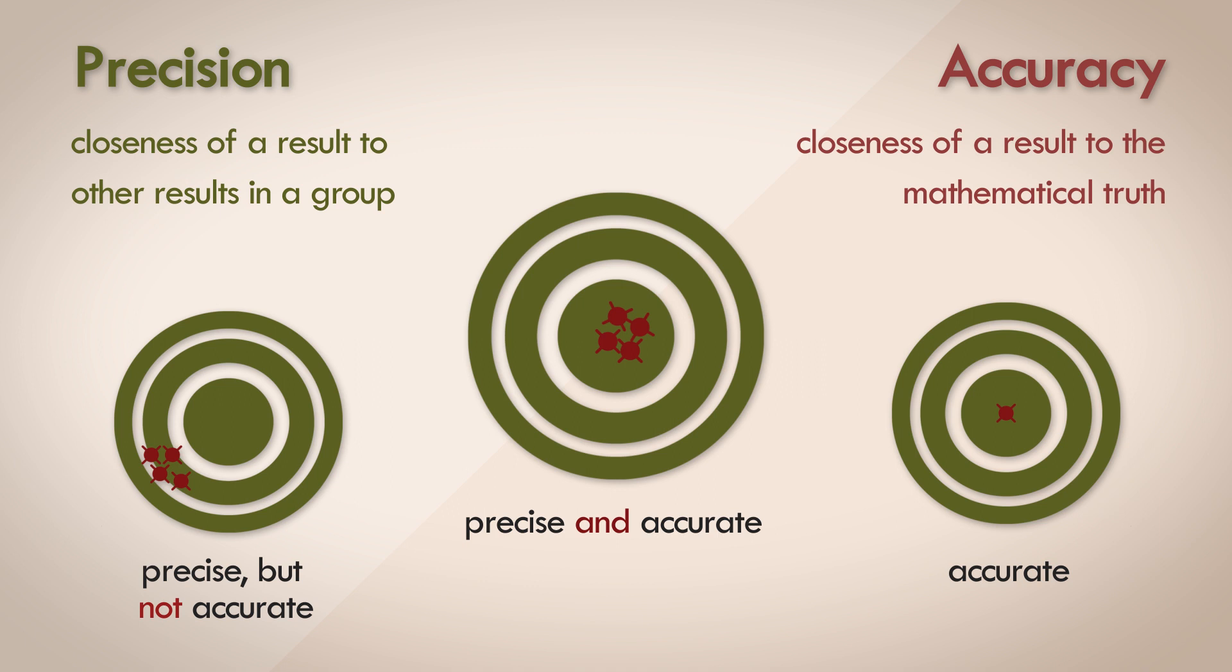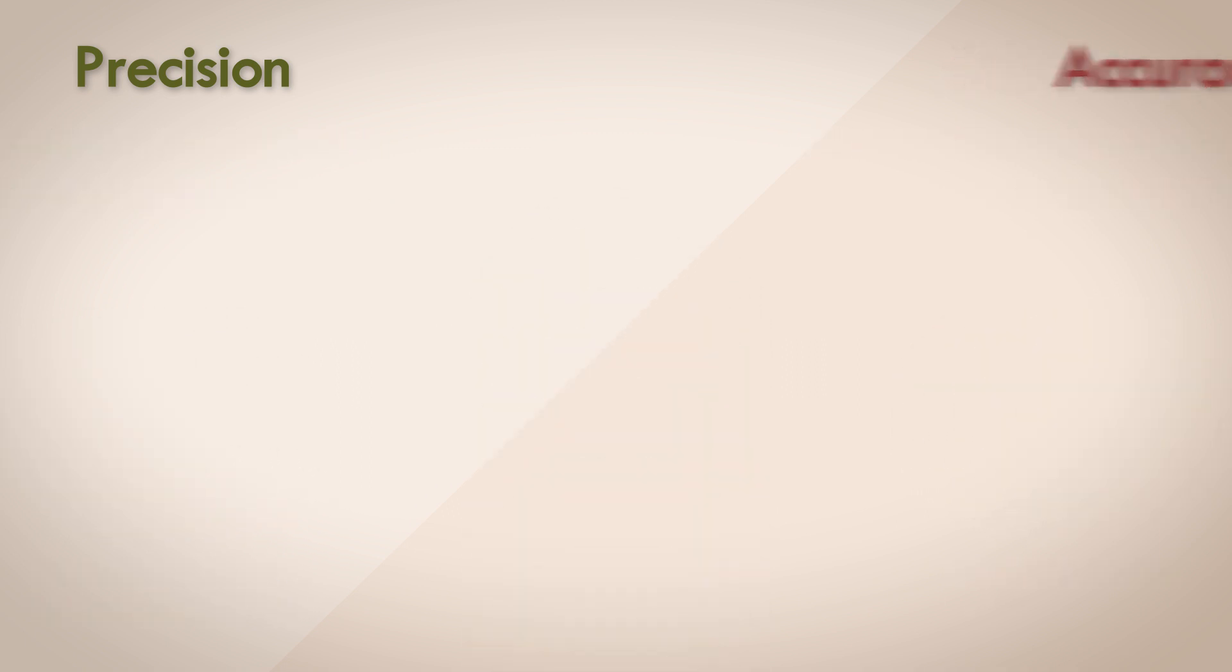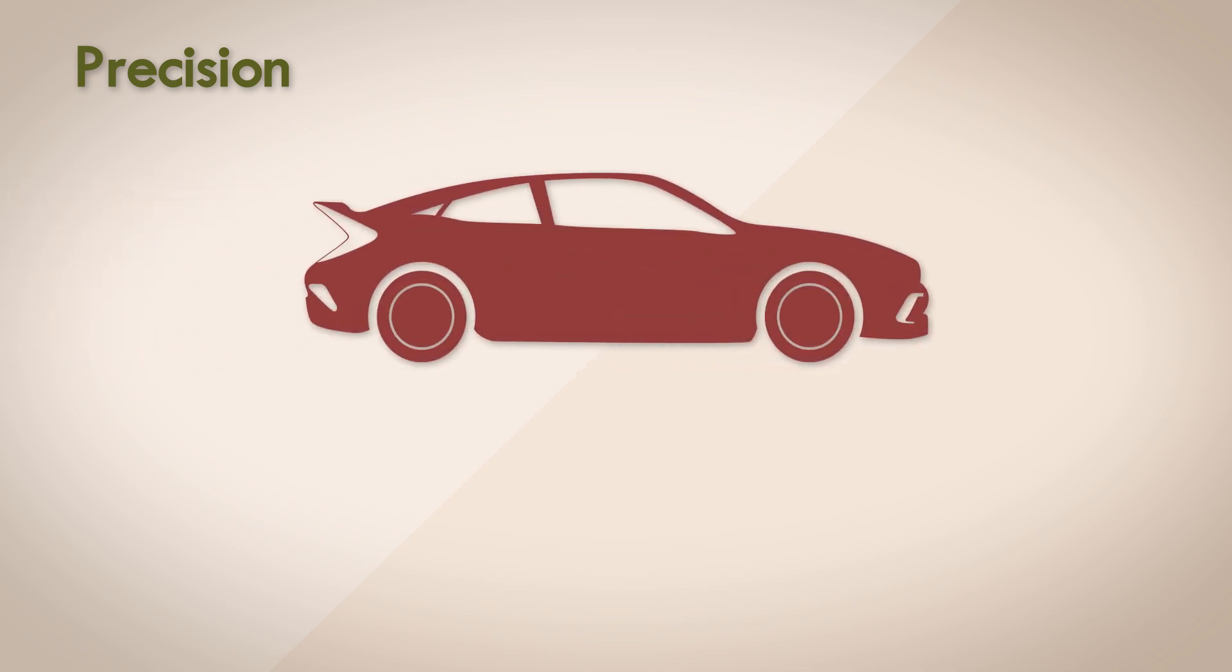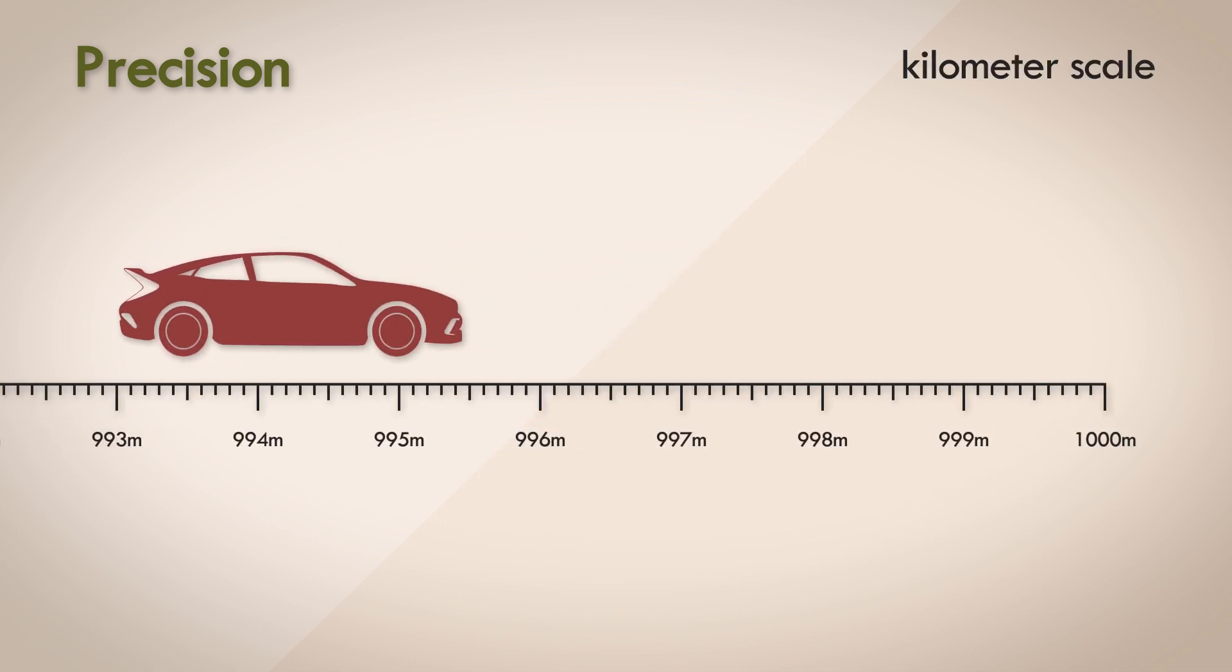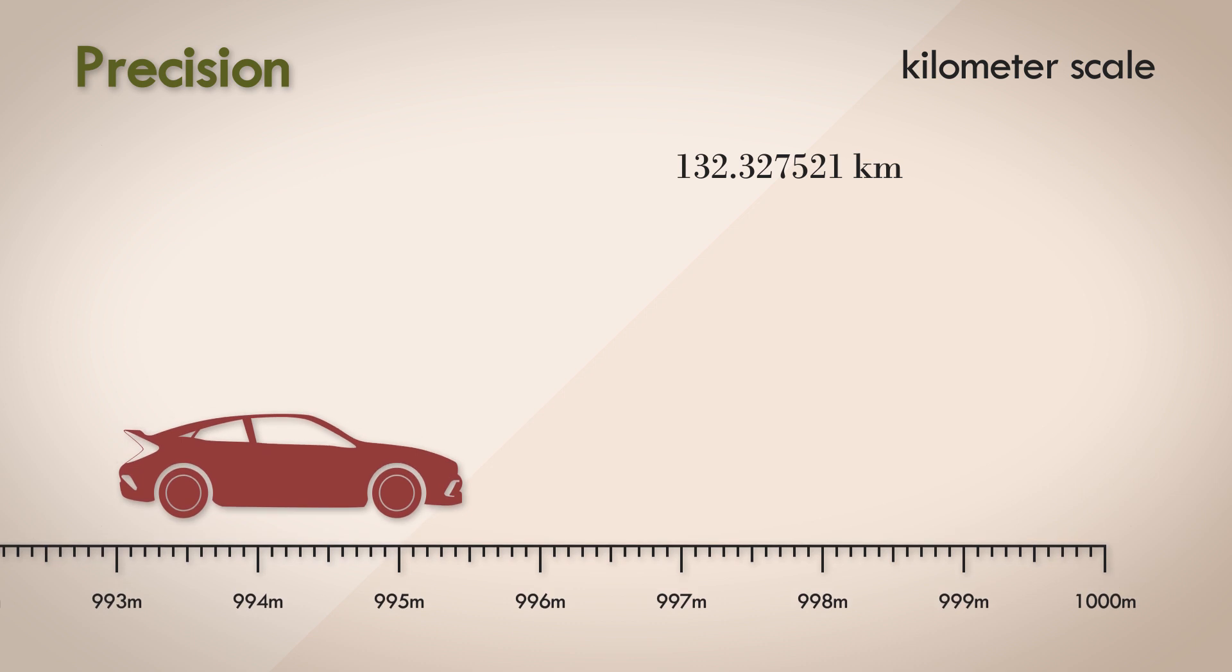So let's take a concrete example. Let's say you want to measure the length of a car. The mathematical truth is that the length of the car is 255 cm. But you're given a ruler that only measures in kilometers. You could say that the car is 132.327521 kilometers in length. Now this is wildly inaccurate since it is nowhere close to the mathematical truth, but it is quite a precise measurement since it is very specific and has a very fine least count.